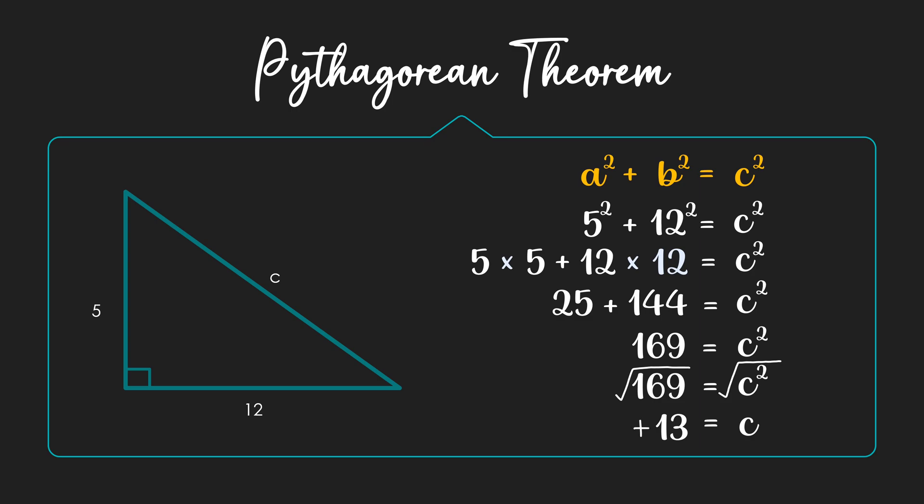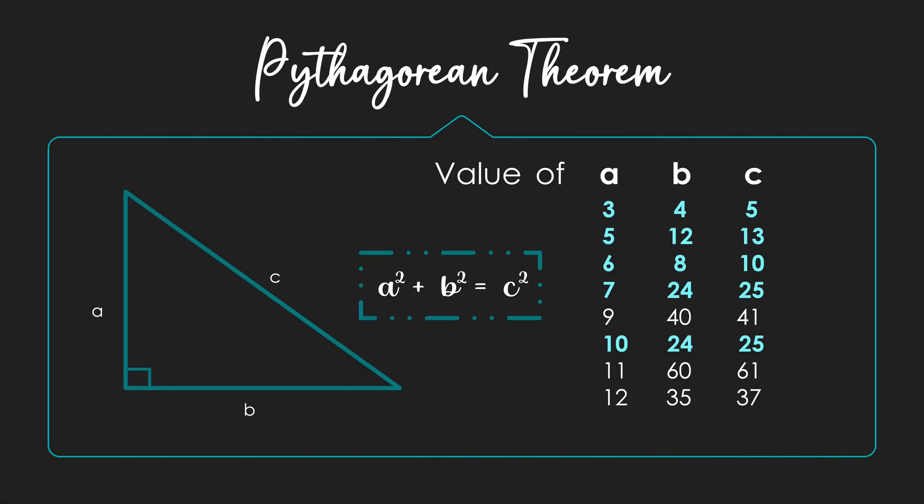Notice how the base was 12 and the hypotenuse came out to be 13, which is really close. That brings us to a trick. Suppose I didn't know the value of root 169. No normal person does. I could have added 1 to the base, which was 12, and I would have gotten 13. I would have squared 13 and gotten 169, and that would have been my answer.